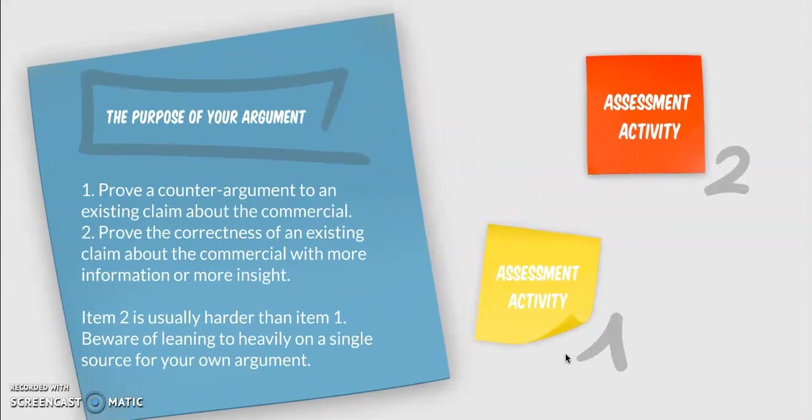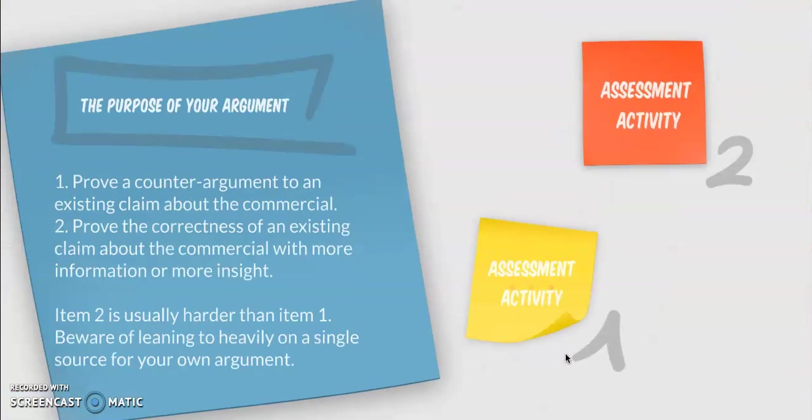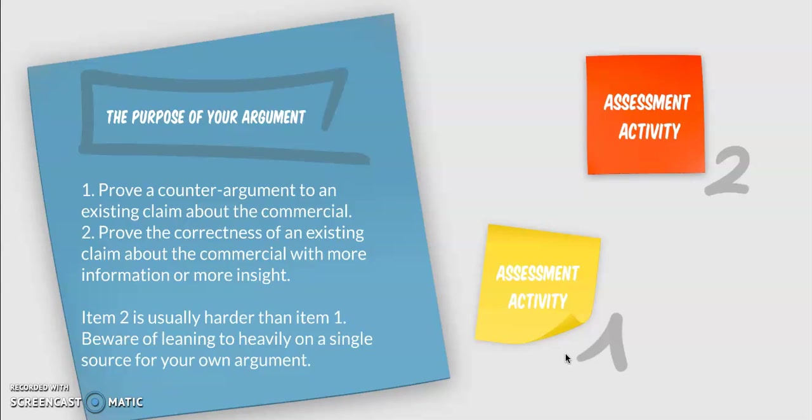We should talk about those moving parts. The first is to focus on the purpose of your argument. You should prove a counter-argument to an existing claim about the commercial, or you can prove the correctness of an existing claim about the commercial with more information or more insight. And remember that item two is usually harder than item one simply because you have to bring something new to the table. Otherwise, you're just copying.